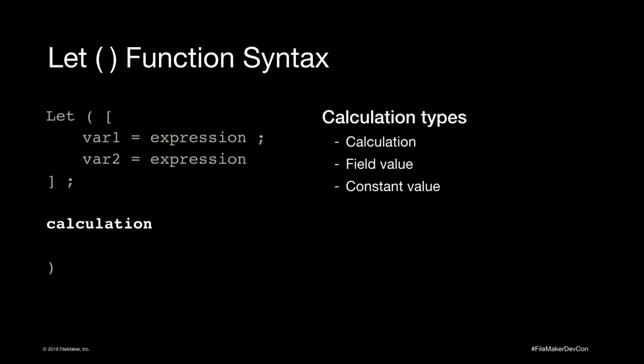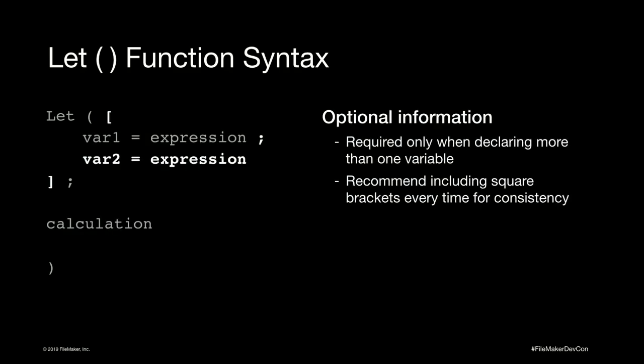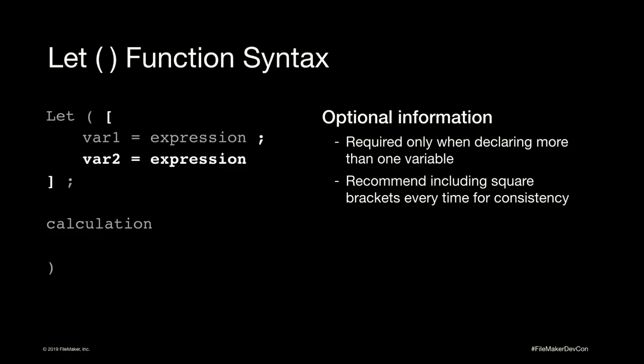One thing worth noting: there is an optional section where if you're only declaring a single variable, you can leave out the square brackets. I would argue you should just leave them in, so that if you have to edit that calculation later you don't have to think about where they go back in. Part of this is my CDO condition — like OCD except the letters are in alphabetical order like they're supposed to be.